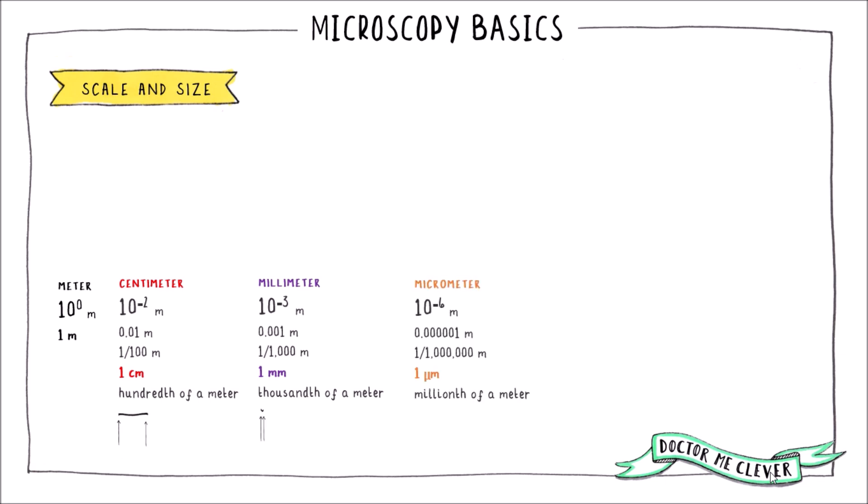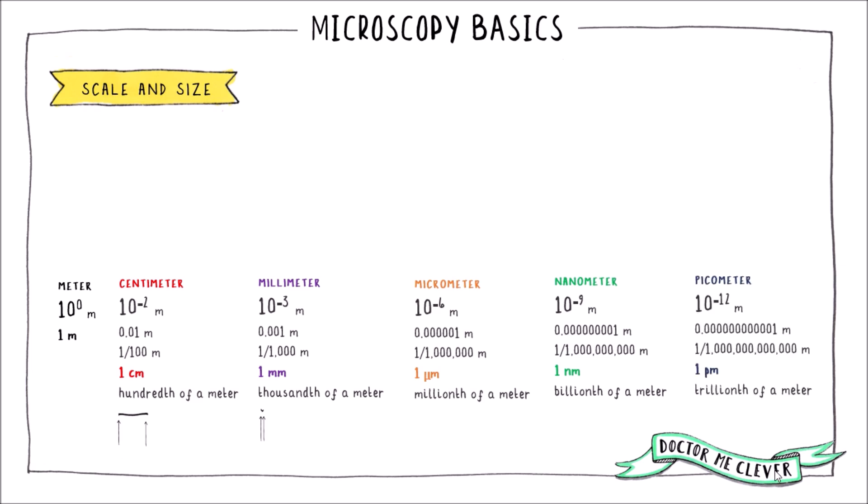However, when we try to view a micrometre, which is one millionth of a metre, the human eye cannot distinguish between or resolve its two end points, and therefore we cannot see it without the aid of a microscope. Likewise for anything smaller, like a nanometre, which is one billionth of a metre, or a picometre, which is one trillionth of a metre — we would need an awful lot of help to see something that small.